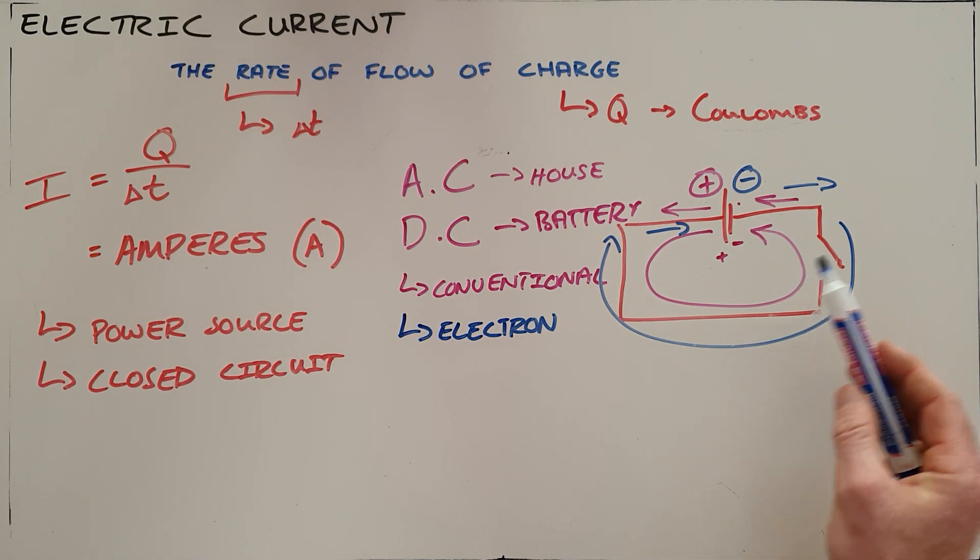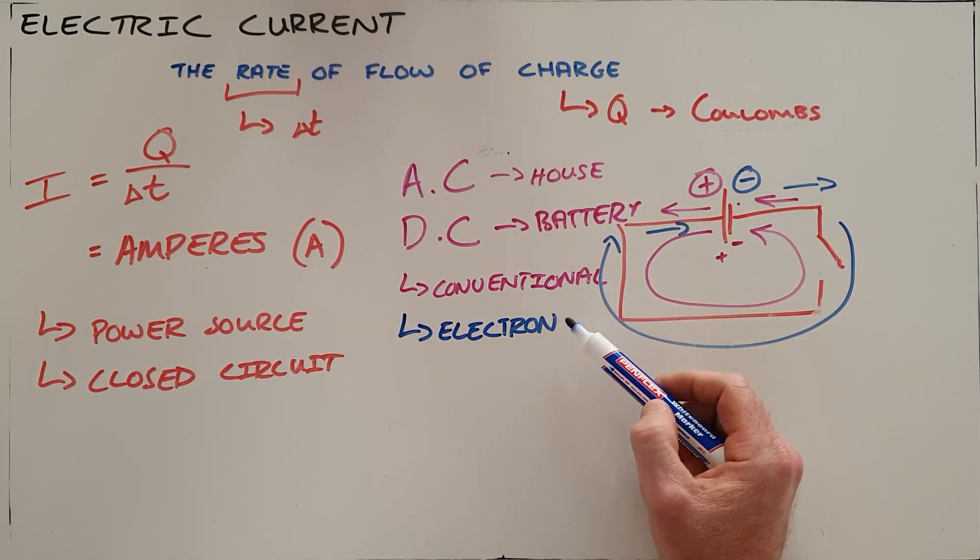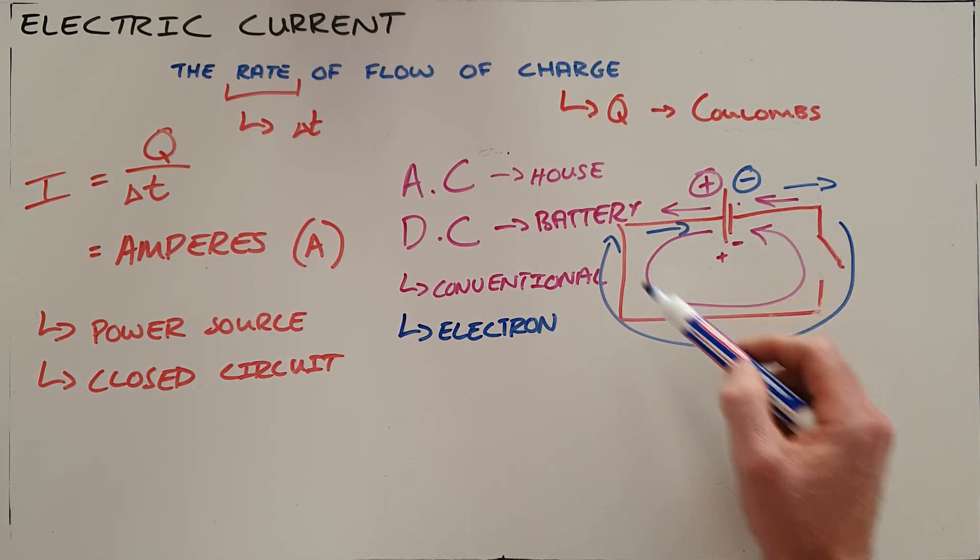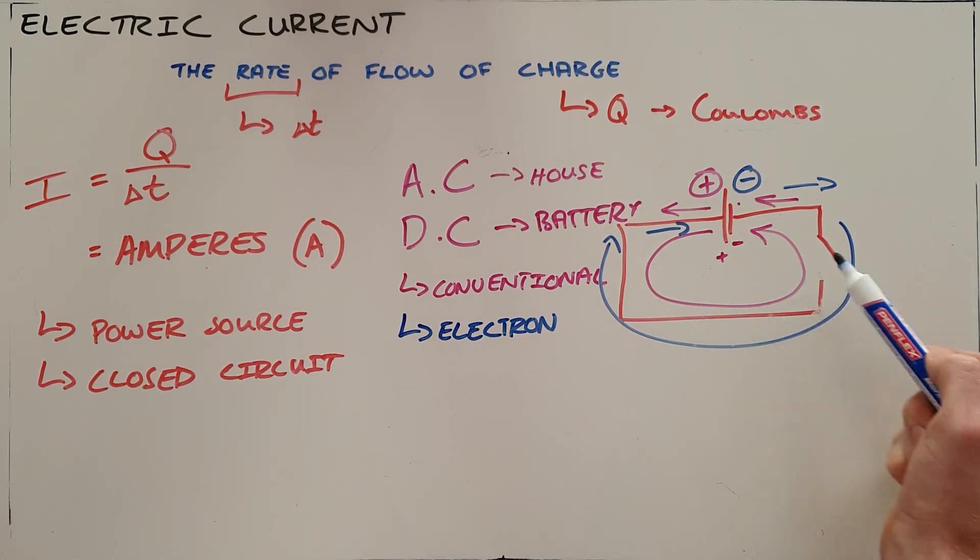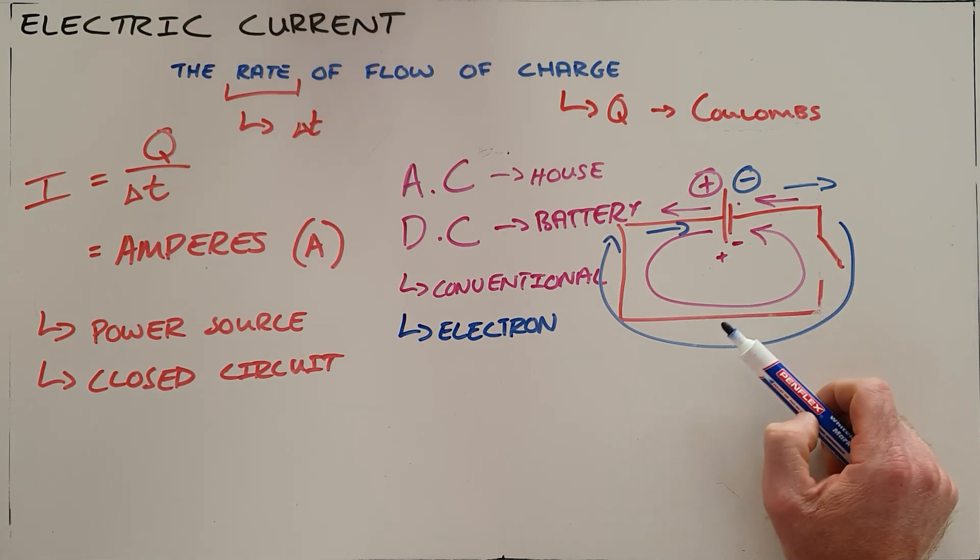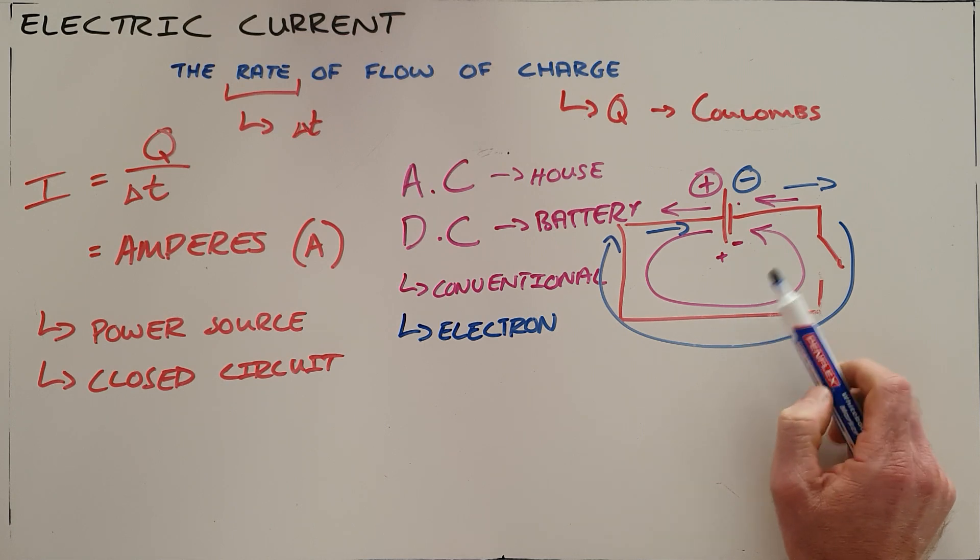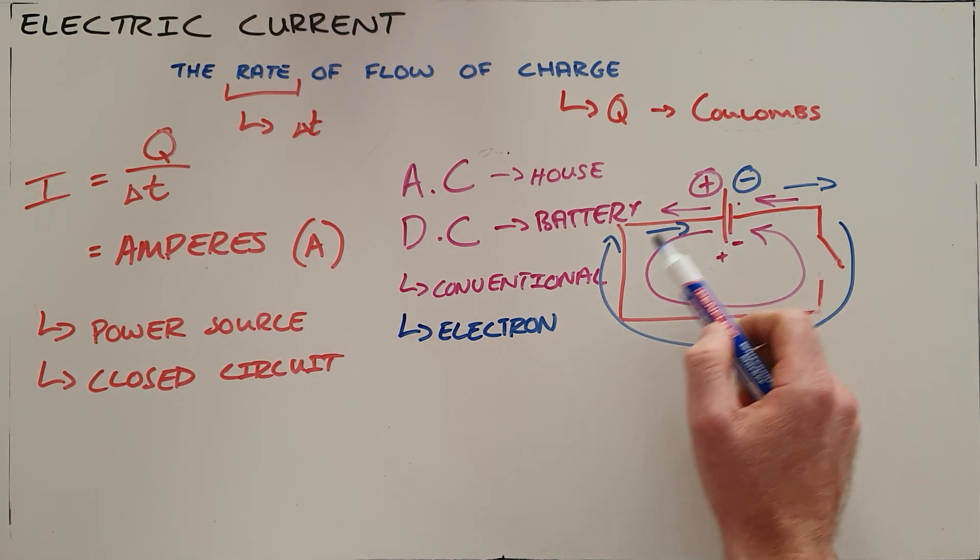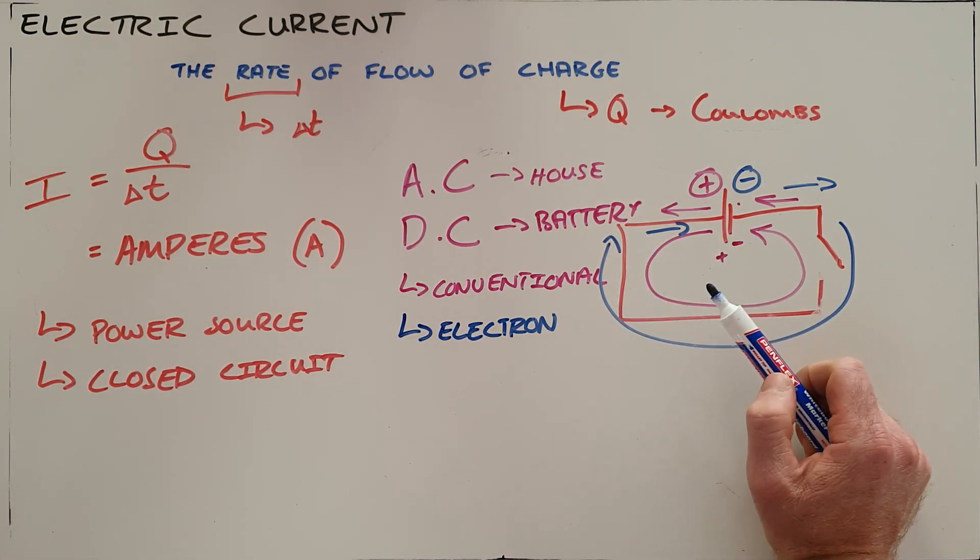It is important to note that the type of current - whether conventional or electron current - does not determine the operation of the circuit. The same rules still apply for current, voltage, and resistance. It is just the order in which they flow that changes.